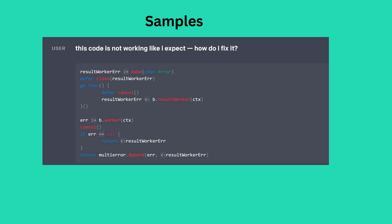In the following sample, Chat asks clarifying questions to debug code. User: This code is not working like I expect — how do I fix it? Chat: It's difficult to say what's wrong with the code without more context. Can you provide more information about what the code is supposed to do and what isn't working as expected? Also, is this the entire code or just a part of it?